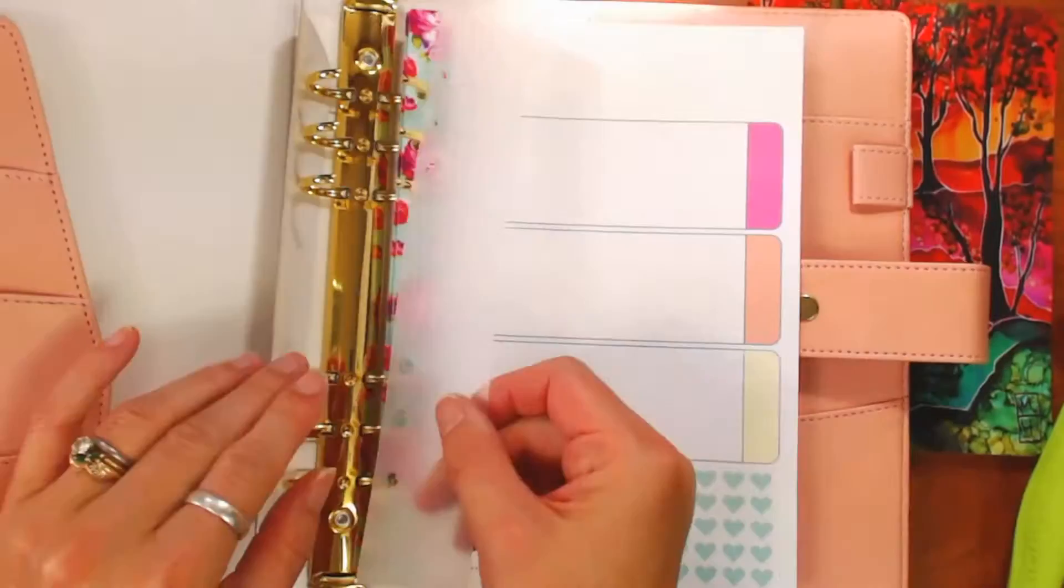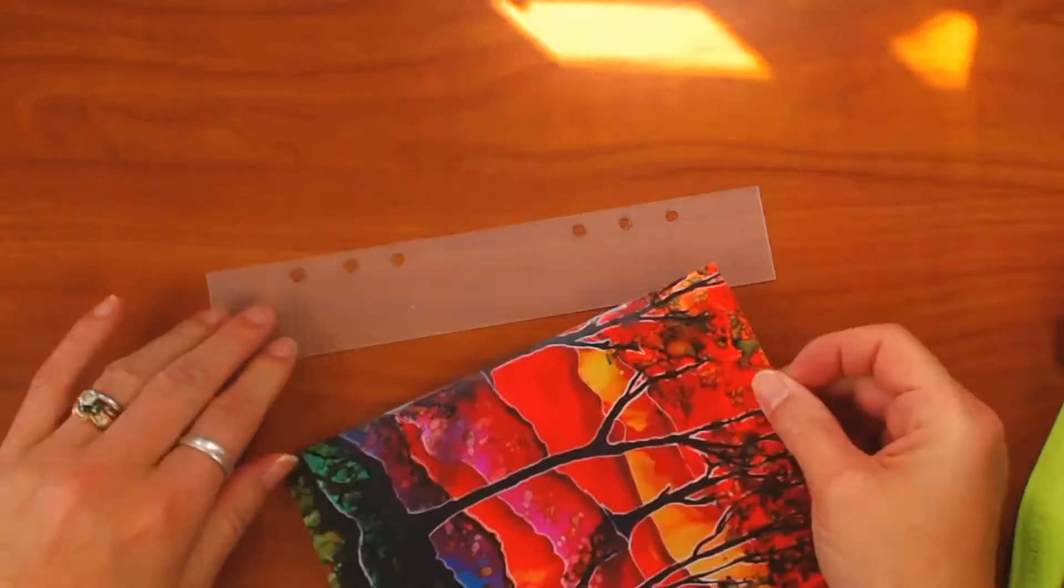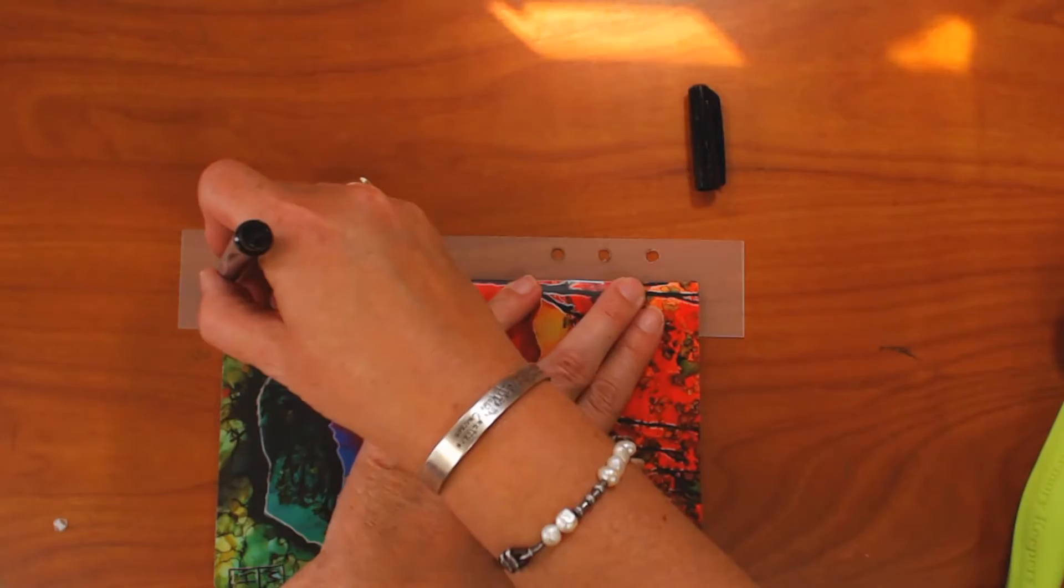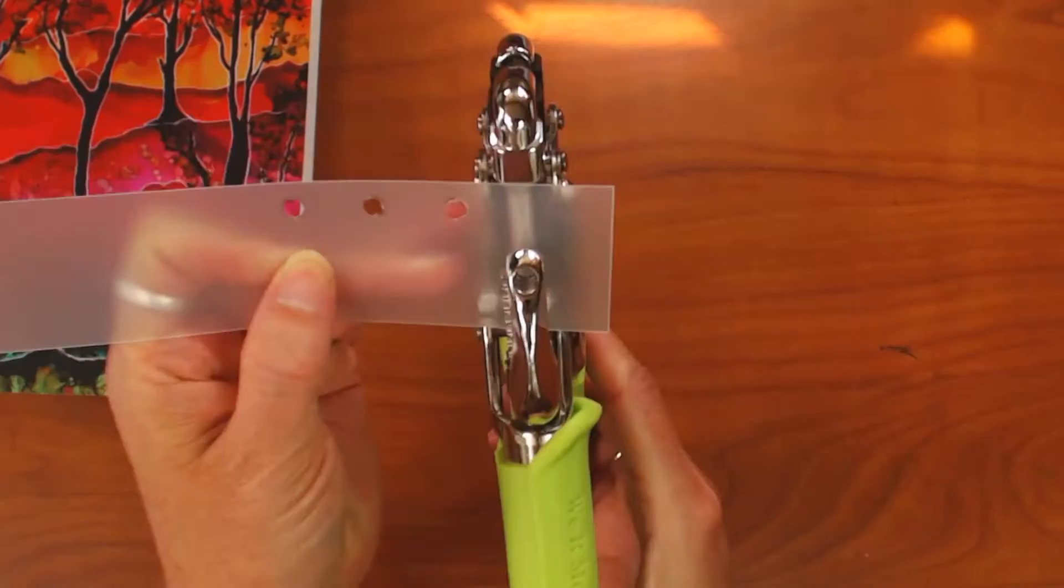So now I'm testing the holes to see if they fit on the planner rings and they fit perfectly. So the next thing I'm going to do is just take my notebook or whatever insert that you're going to be using and I just eyeball it right in the middle of the length and the width of this plastic strip. And then I take my pen and I simply mark right around the edges on the corners of that insert.